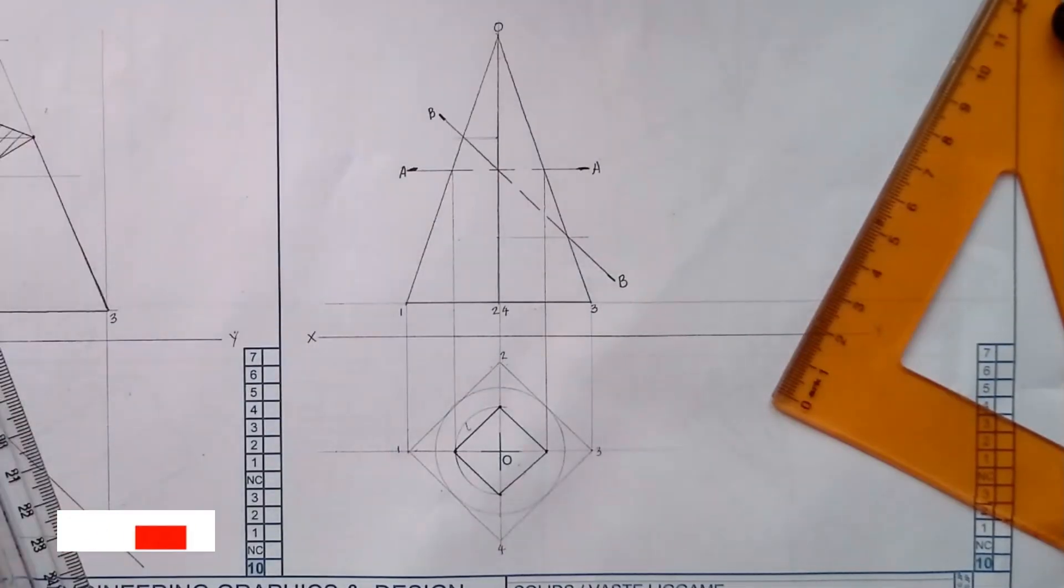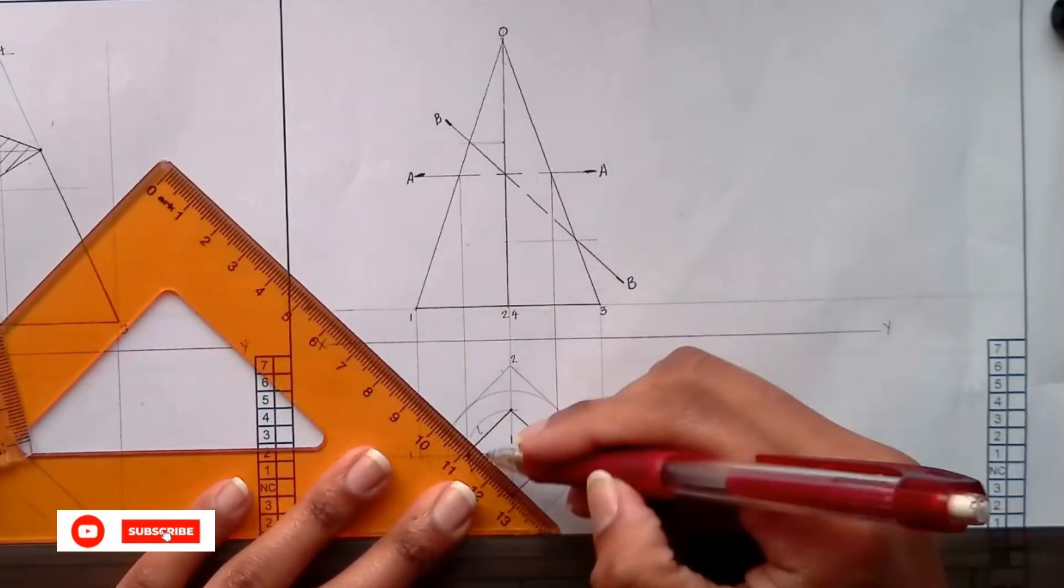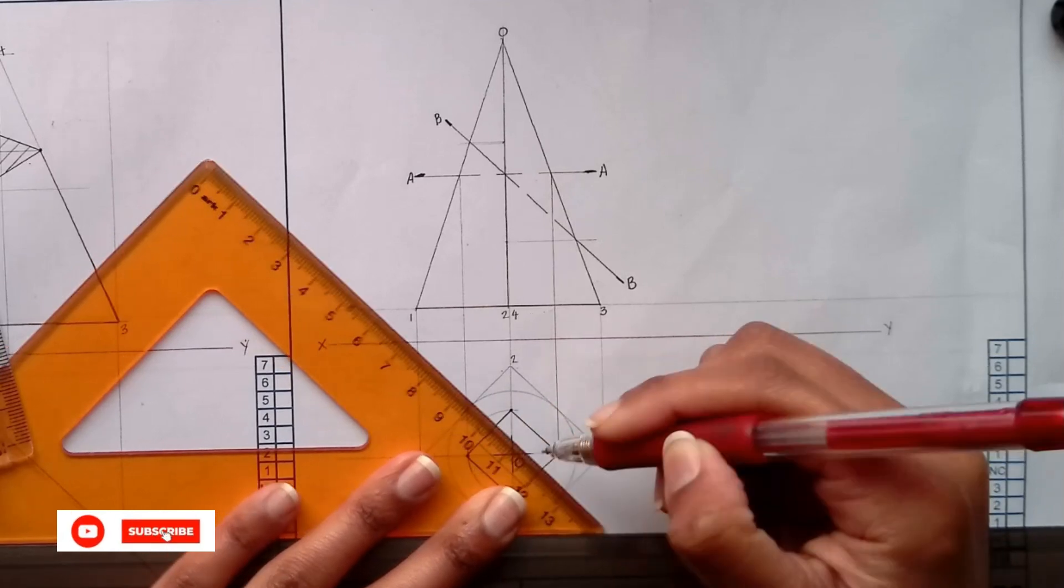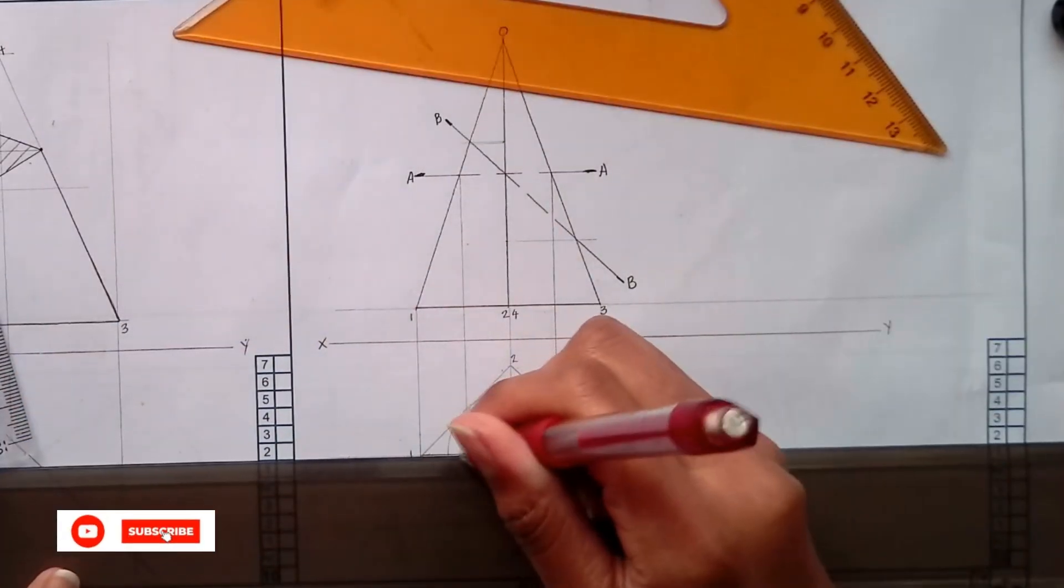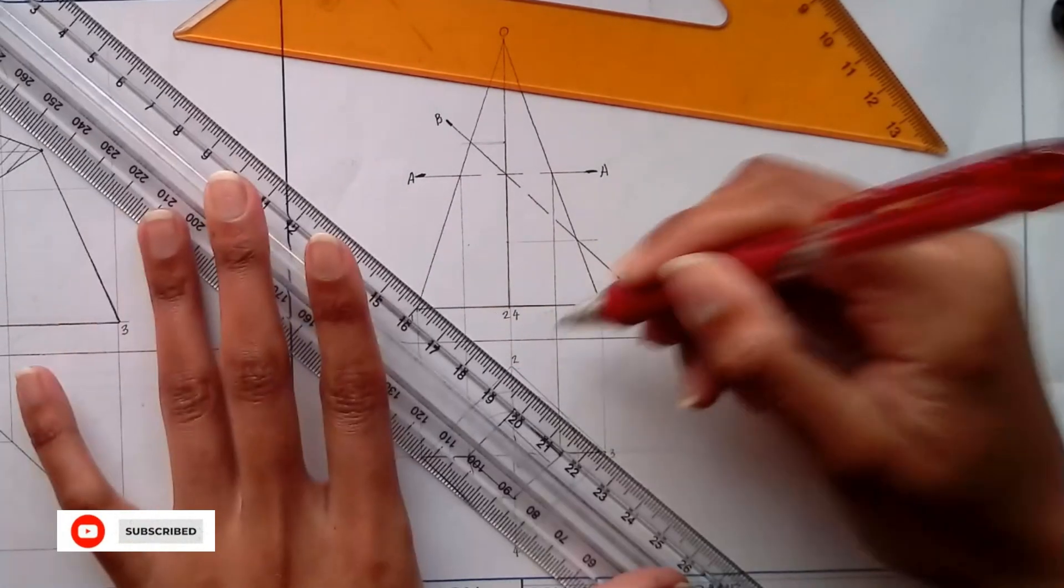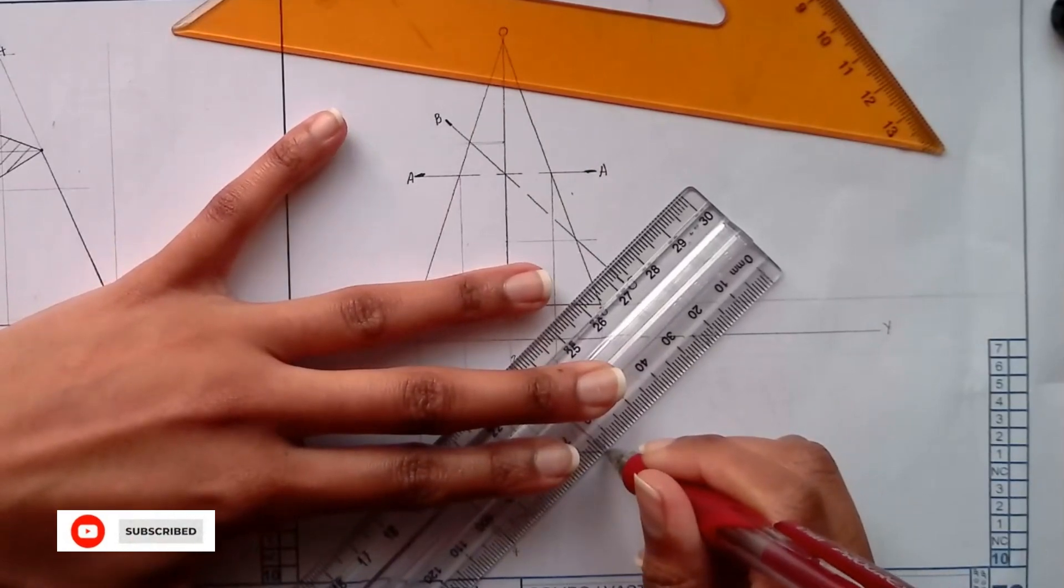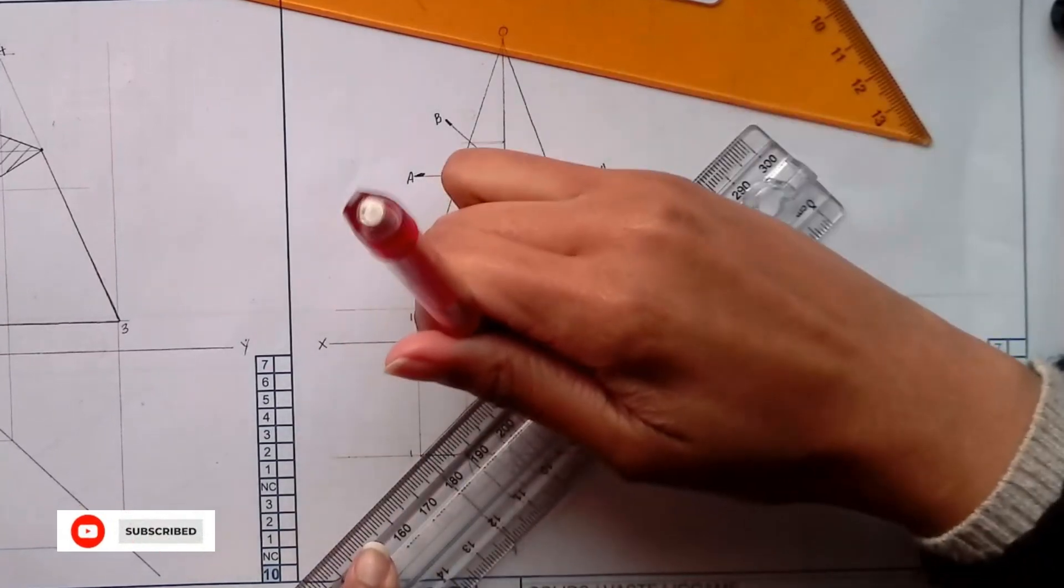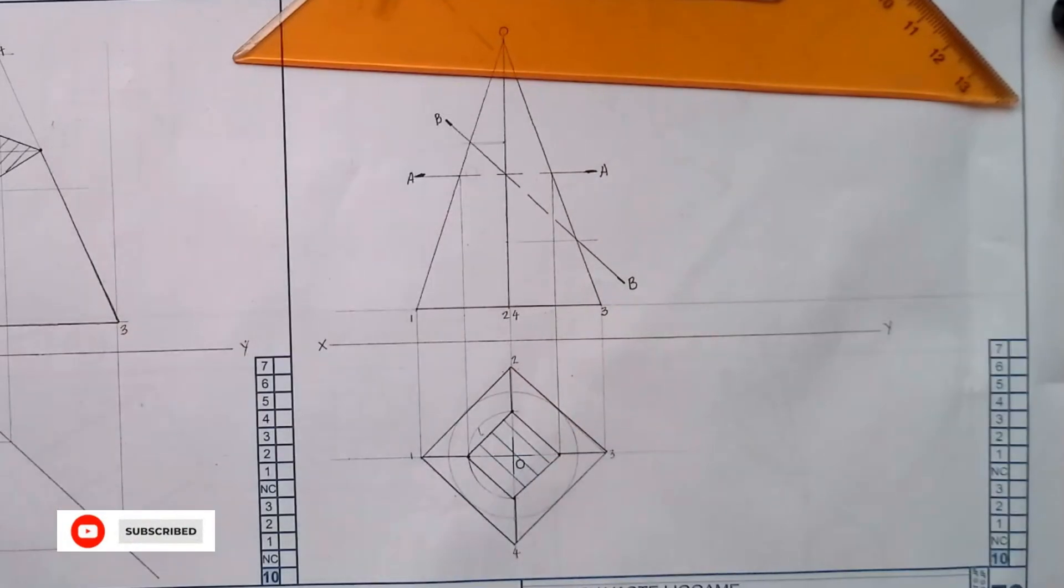Then once you have that section, then extend your points out only up until the cutting plane. So that is the sectional top view.